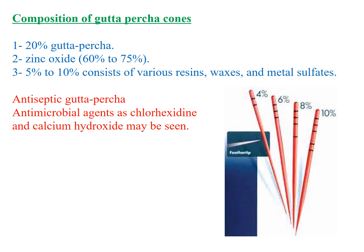Gutta-percha cones are mainly composed of 20% gutta-percha, 60 to 75% zinc oxide which acts as a thickening agent, and 5 to 10% resins and waxes to give it resiliency, and metal sulfates to provide some radiopacity. Certain materials may be impregnated with gutta-percha to give antiseptic or antimicrobial agents like chlorhexidine or calcium hydroxide.